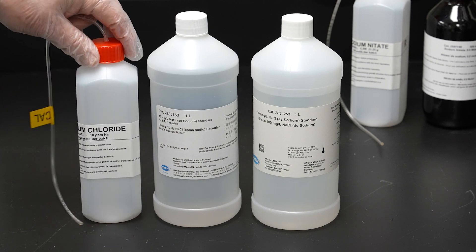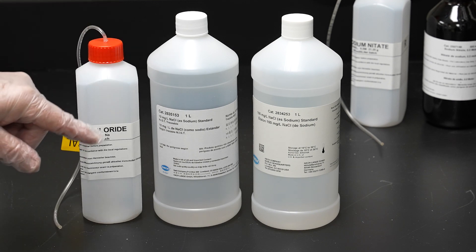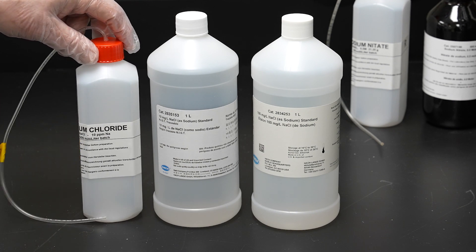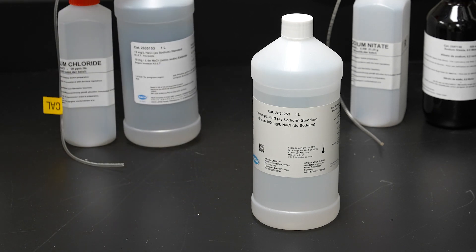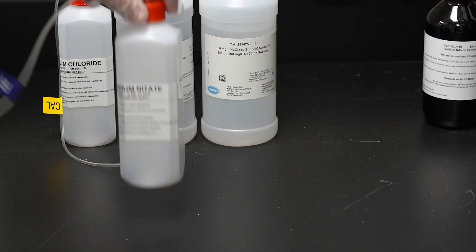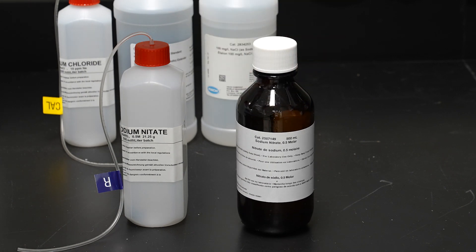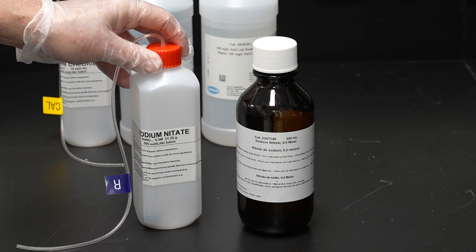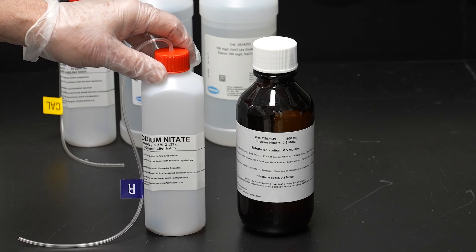Regardless in either case you would pour the standard into this special bottle for sodium chloride calibration. Note that on this it says 10 milligrams per liter. If you're using the 100 milligrams per liter then you would just simply mark out the 10 and with a sharpie overwrite that as 100 milligrams per liter. For reactivation of the sodium electrode we use a concentrated solution of sodium nitrate and again we pour this into the bottle labeled for reactivation and then we're set up for setting these up into the instrument.